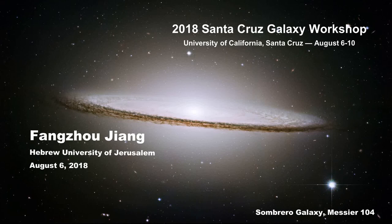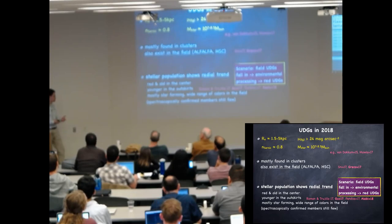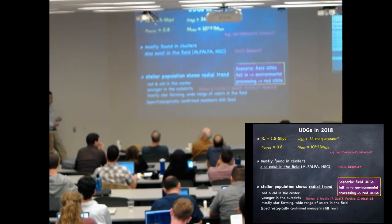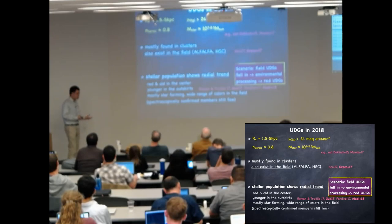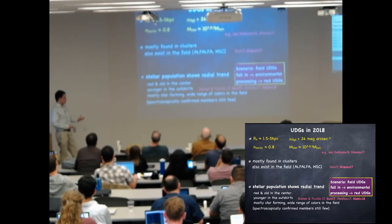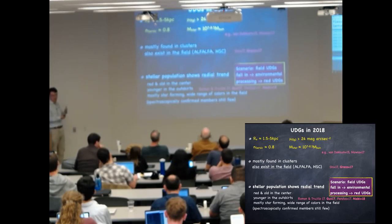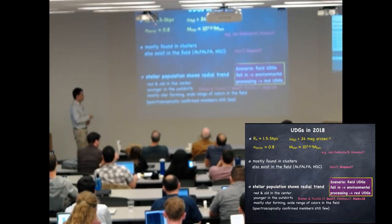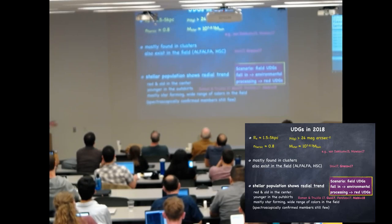After a series of observational efforts, people now have a statistical sample of spectroscopically confirmed UDGs in the Coma cluster and in other galaxy clusters or groups. These samples seem to show that UDGs are red and old in the center of clusters or groups, younger in the outskirts, and mostly star-forming with a wide range of colors in the field. The simple picture the observations put forward is that UDGs form in the field, fall into galaxy groups and clusters, get environmentally processed, and become red UDGs in Coma.